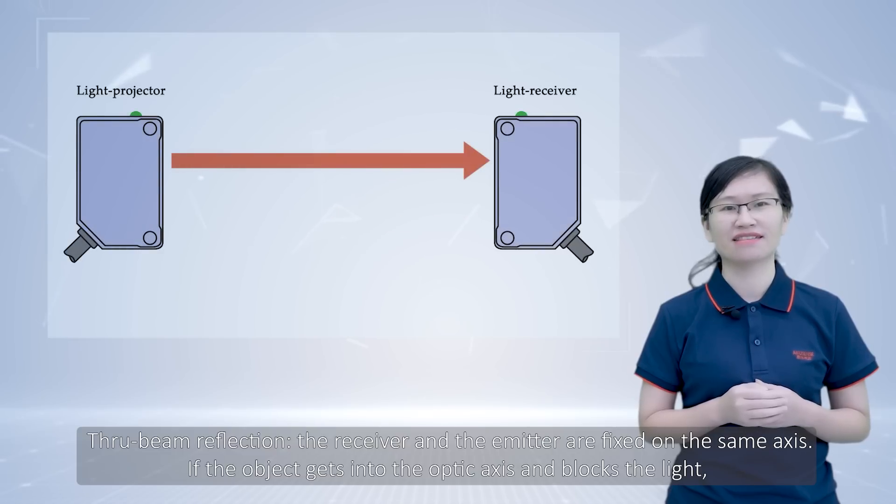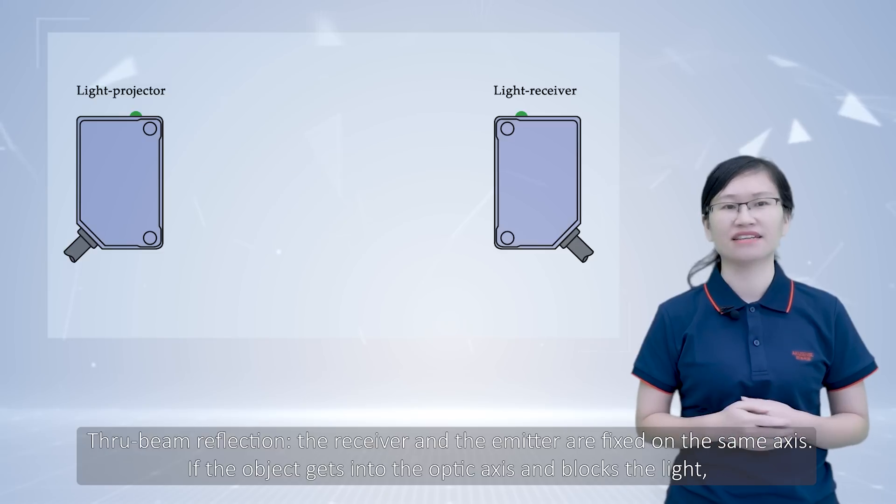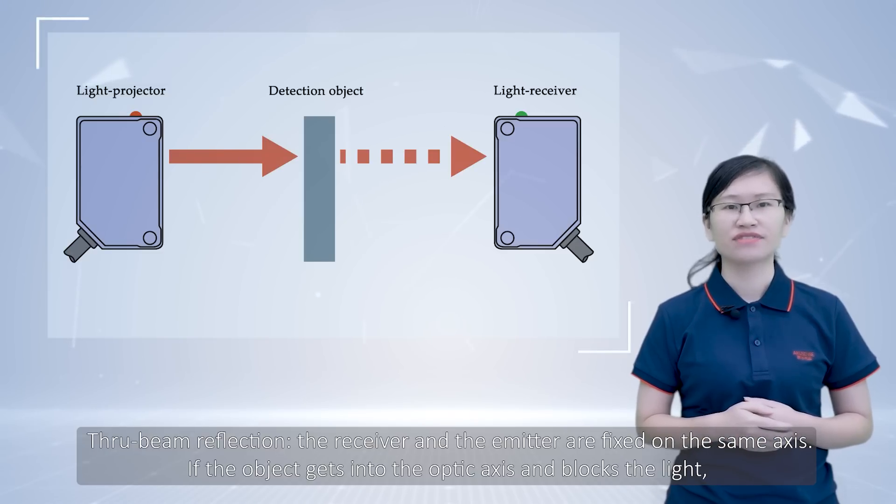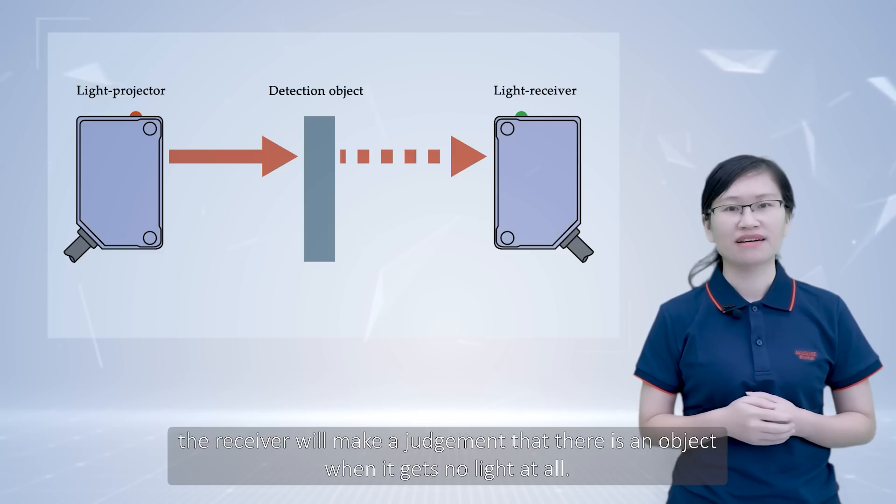For through-beam reflection, the receiver and emitter are fixed on the same axis. If the object gets into the optic offset and blocks the light, the receiver will make an adjustment that there is an object when it gets low light or no light at all.